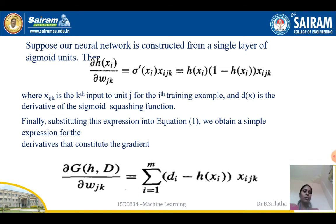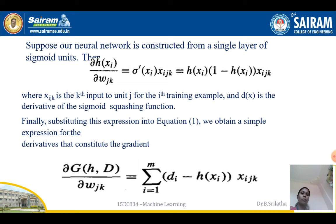Substituting the sigmoid derivative, the h(xi)*(1-h(xi)) terms cancel. The simplified expression for the gradient constraint is: d/d(w_jk) of G(h, D) = sum from i=1 to m of [di - h(xi)] * x_ijk, where x_ijk is the kth input of unit j for the ith training example.